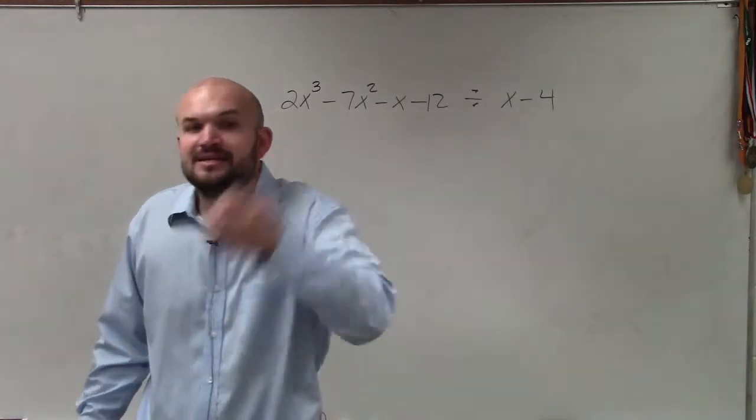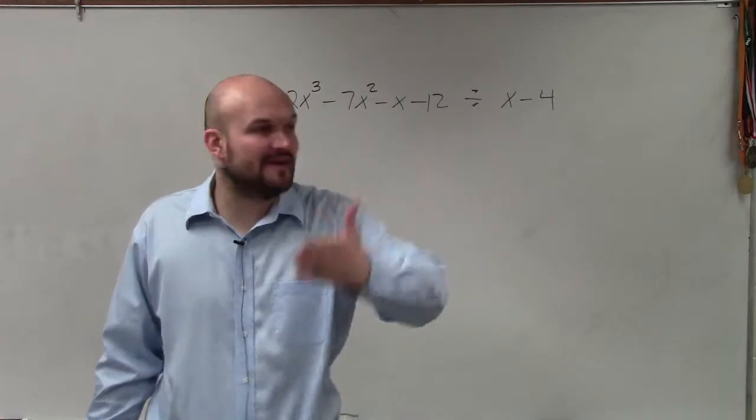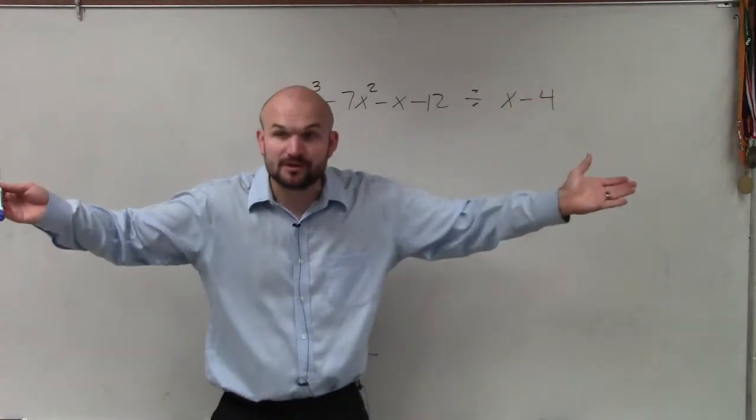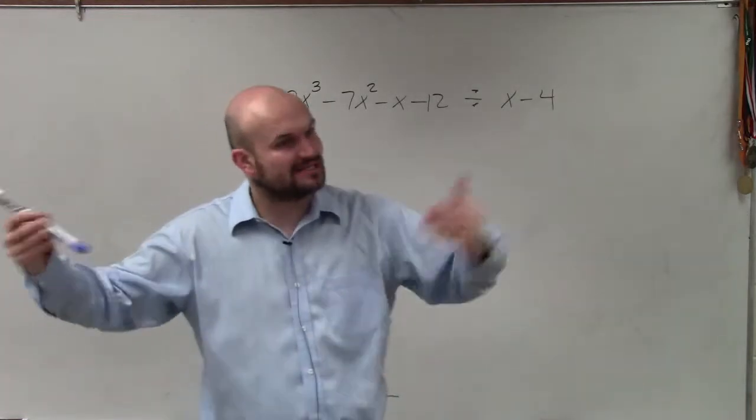What we can do is we can set our factor equal to zero to find the zeros. So in this case, this would be x is equal to 4, would be a zero. That's where the graph would cross the x-axis.